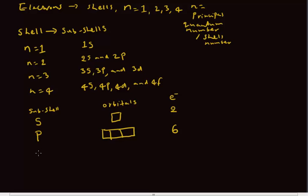So if I have my D subshell, it's actually made of five orbitals. And we said each orbital can accommodate up to two electrons. So if each orbital can accommodate up to two electrons, so that'd be two times five. So this D subshell can accommodate ten electrons.